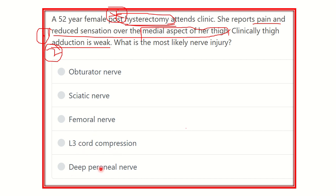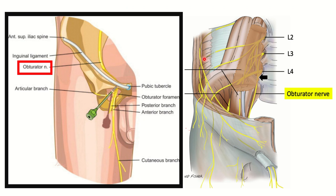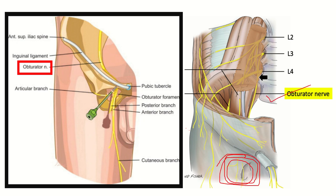Looking at the anatomical pictures, we can see the medial aspect of the thigh. This medial aspect is supplied by the cutaneous branch, which arises from the obturator nerve. In the second picture, we can also see the obturator nerve supplying the medial aspect of the thigh via its cutaneous branch.